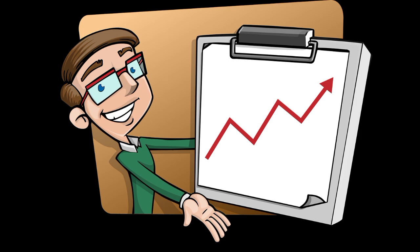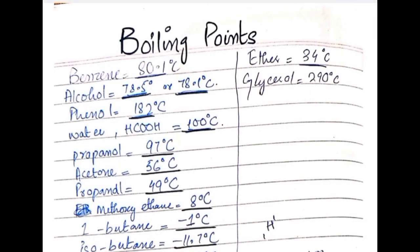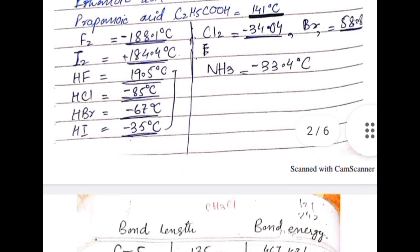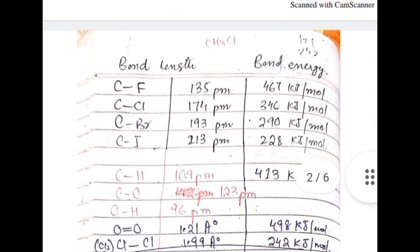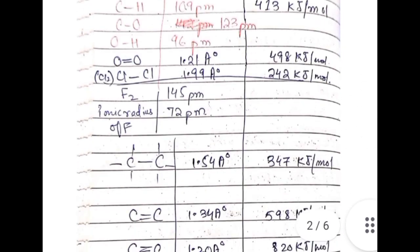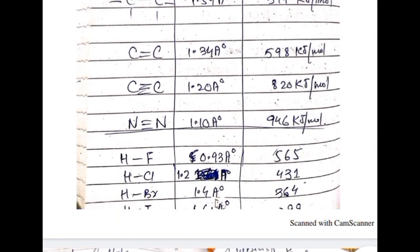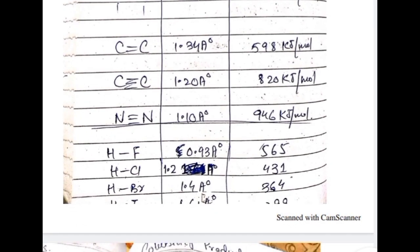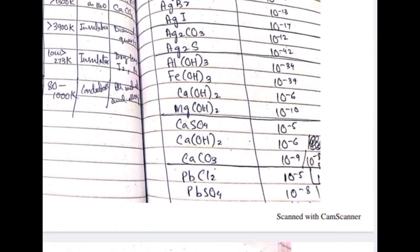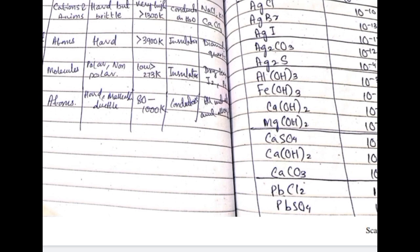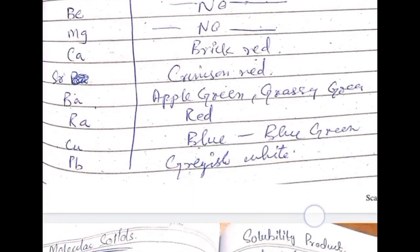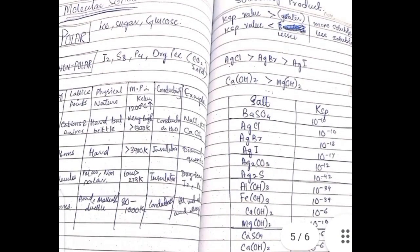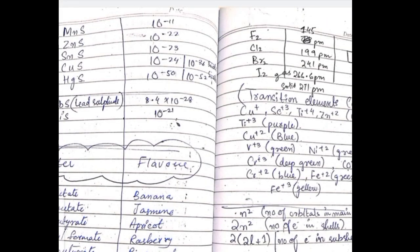Similarly, in chemistry, the values that need to be learned should also be noted separately in one place — such as bond length, bond energy, boiling points, different flame colors, transition elements' colors, KSP values, etc. All of these should be noted down separately and memorized, because in the end it is these that we need to revise — we don't have to read all the full notes again. This short listing is what comes to our aid.